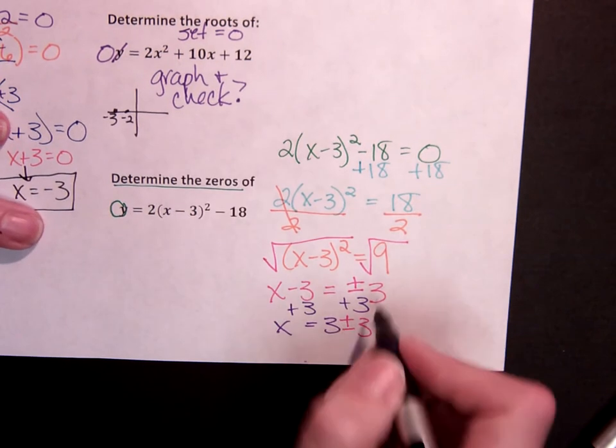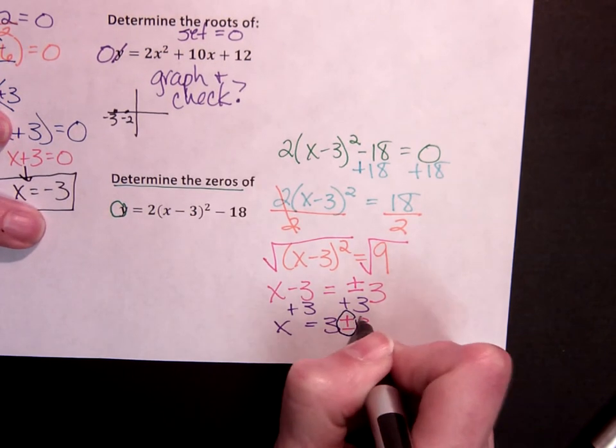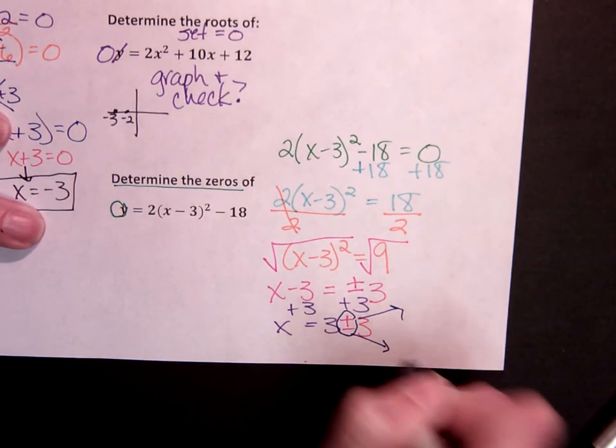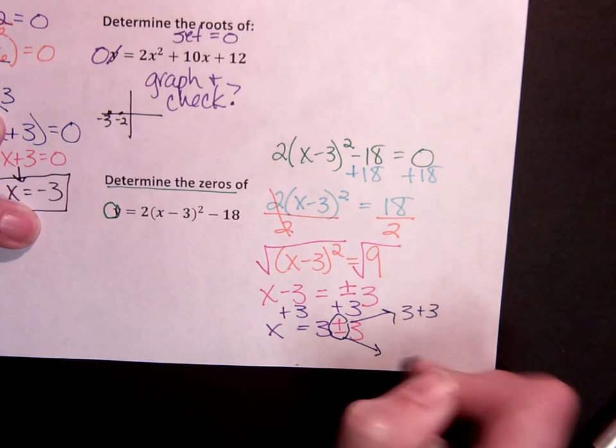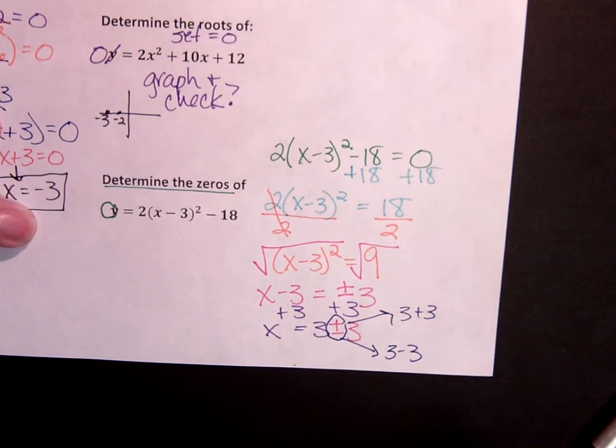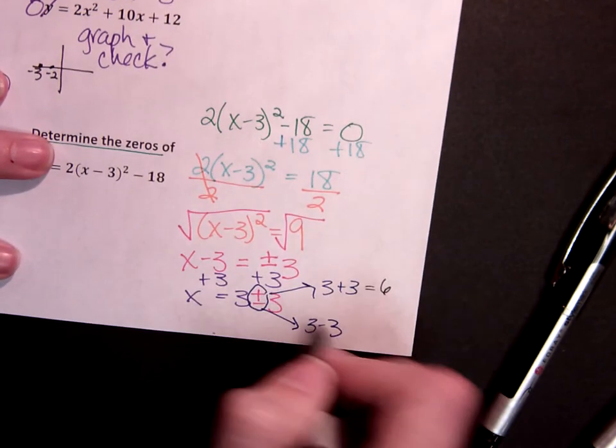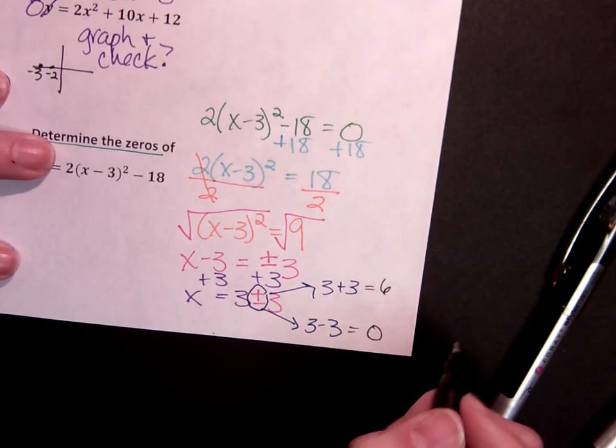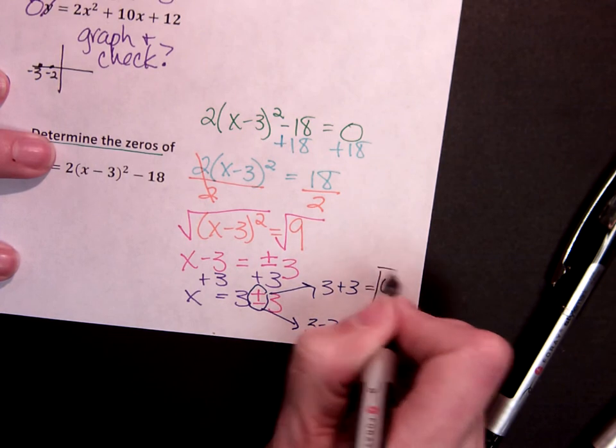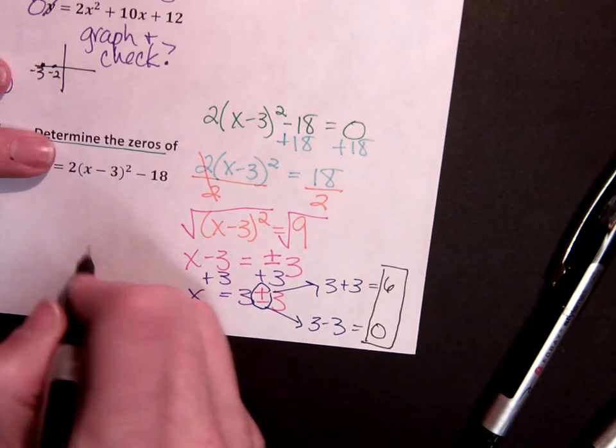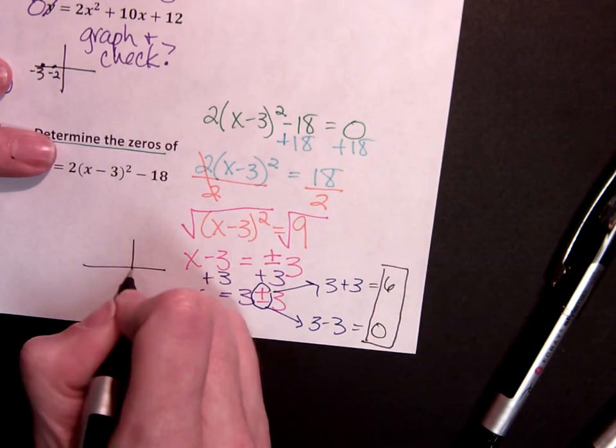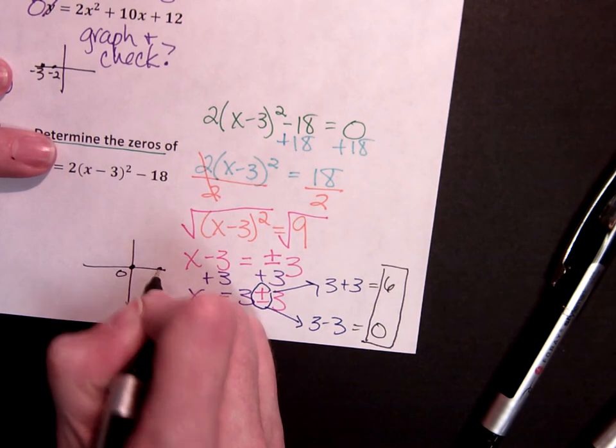I need to go ahead and figure out what that means. So we're going to take this plus or minus and we're going to split it. 3 plus 3, 3 minus 3. 3 plus 3 equals 6. 3 minus 3 equals 0. So I know that my zeros happen. It crosses the graph at 0 and at positive 6.